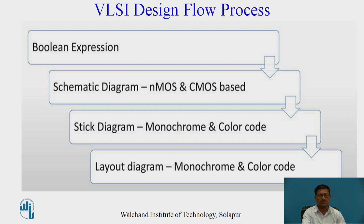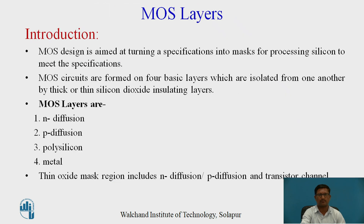In the VLSI design flow process, the first step is the Boolean expression for the CMOS logic, then the schematic diagram using NMOS and PMOS, then the third step is the stick diagram, and the last step is the layout diagram using monochrome and color code. In this session we are highlighting stick diagrams using color code and monochrome in the mask layer introduction.